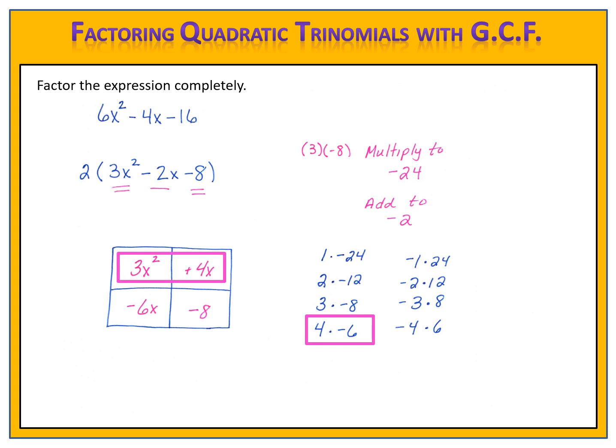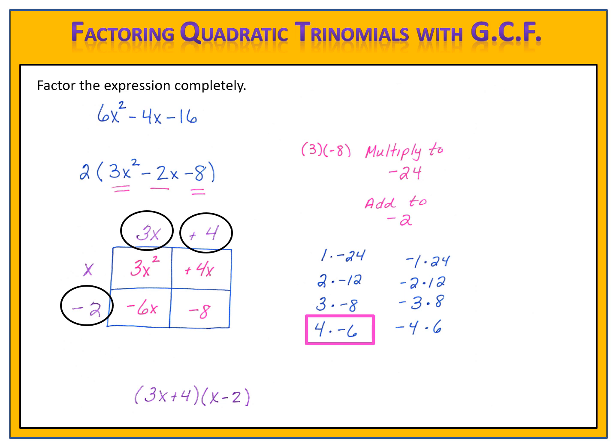Now we look across the top for the greatest common factor of 3x squared and 4x. The greatest common factor is simply x. We use multiplication to fill in the other spots along the grid. x times 3x gives 3x squared, and x times 4 gives 4x. Then 3x times negative 2 is negative 6x, and we double-check: 4 times negative 2 is negative 8, which matches. Our factors are 3x plus 4 and x minus 2.